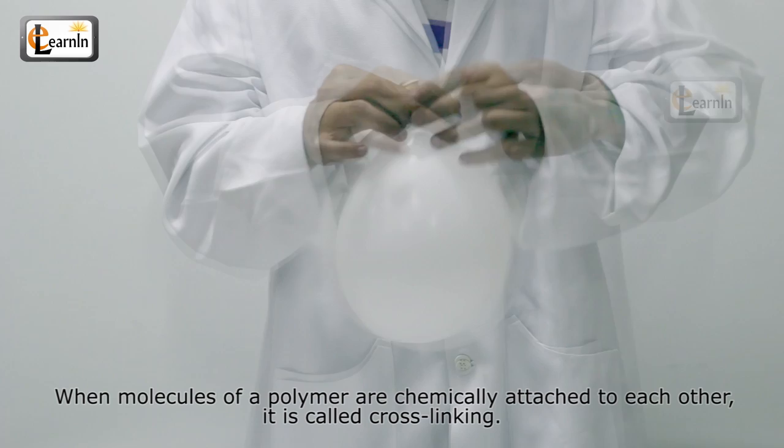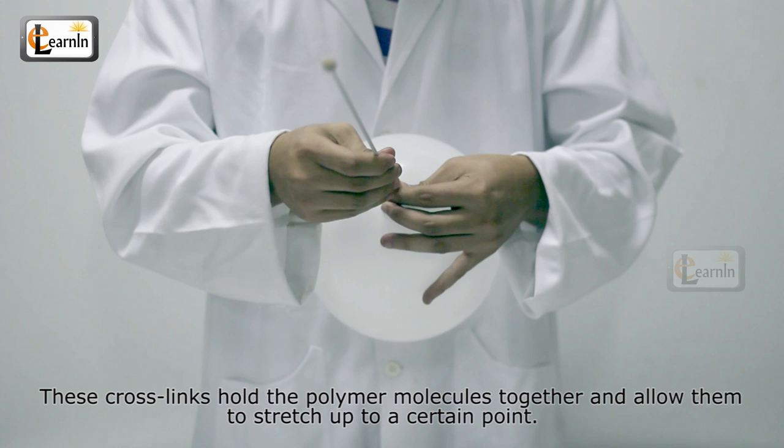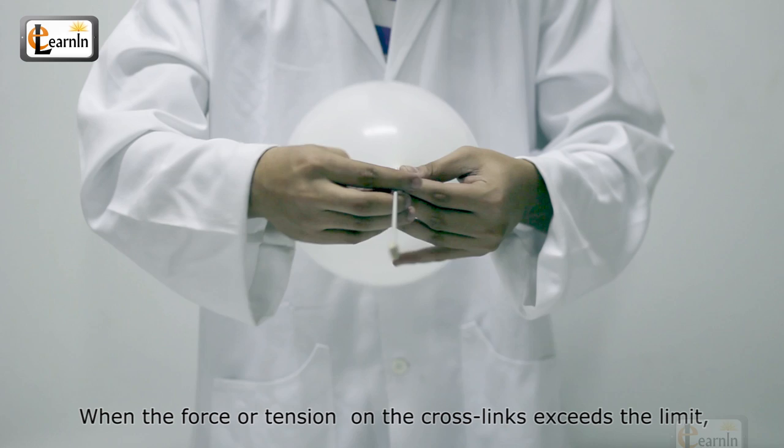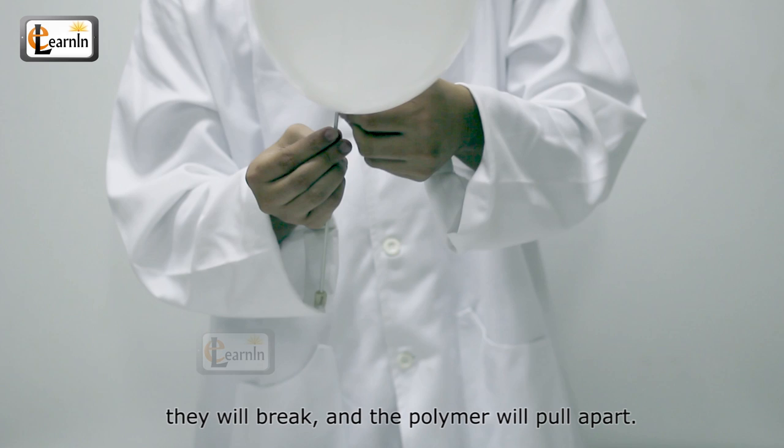These cross-links hold the polymer molecules together and allow them to stretch up to a certain point. When the force or tension on the cross-links exceeds the limit, they will break and the polymer will pull apart.